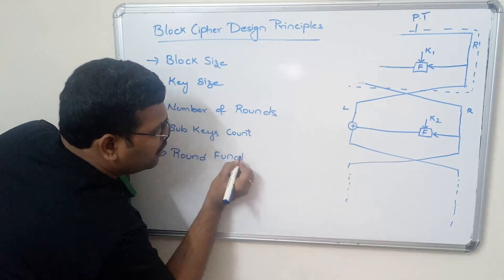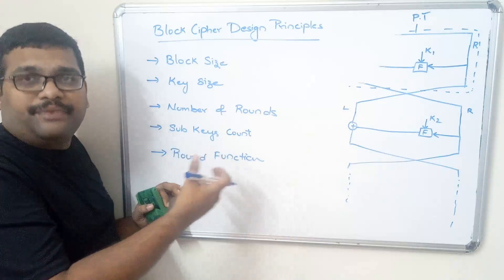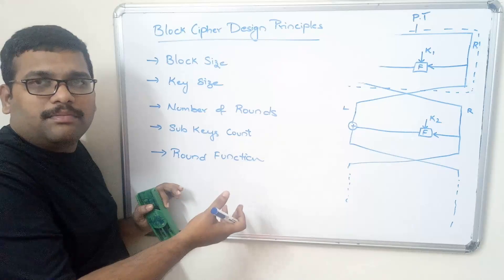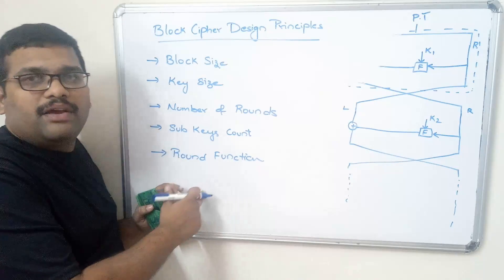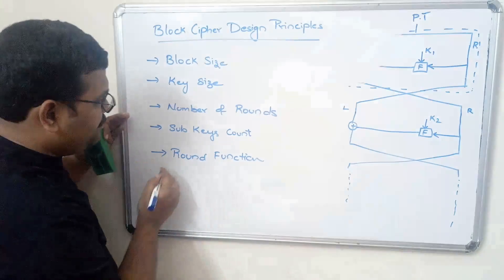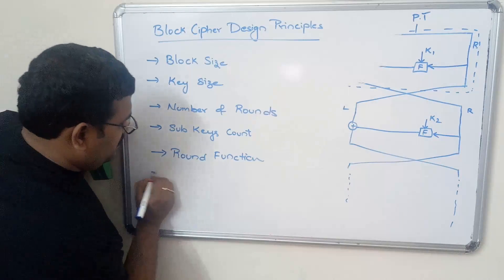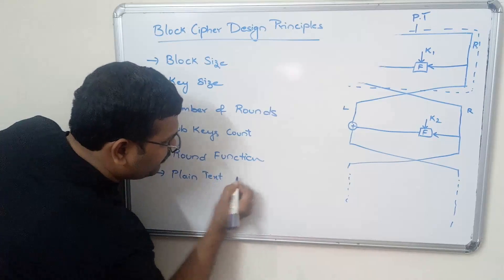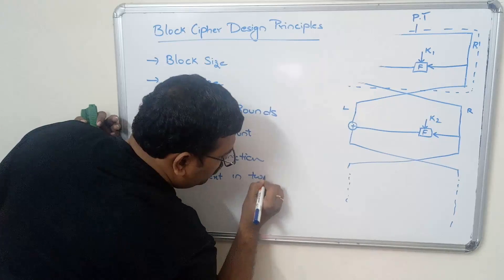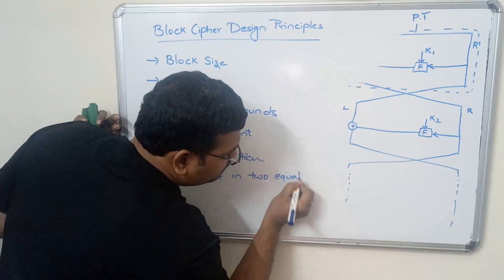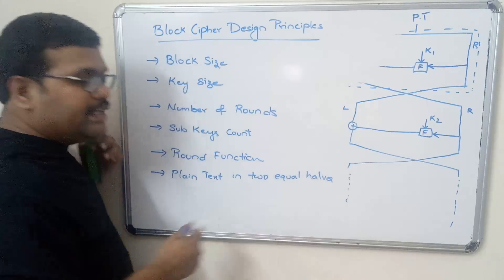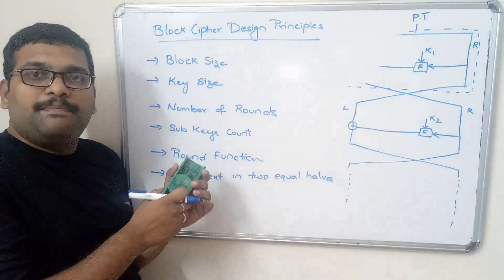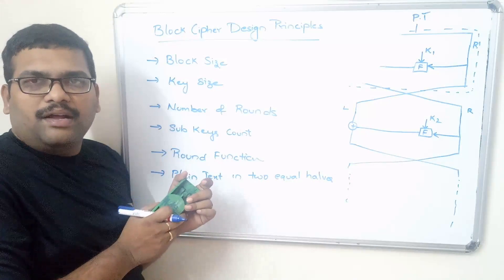Next is the round function. In each and every round we will use one function — it may be a logical function. For every round we have to use the same function. And last but not the least — the plaintext is processed in two equal halves. These are the design principles of any block cipher algorithm.